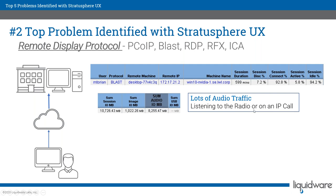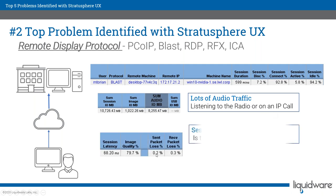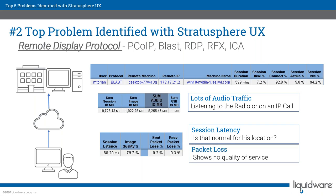We track session latency, packet loss, and audio traffic — for example, eight gigs of audio traffic over a month could mean the user is listening to the radio or on VoIP calls. We assess whether the packet loss is normal for their location. I live in the country so my latency is pretty high, but the question is whether it's normal or indicates other issues back in the data center. We've been monitoring remote display protocols for years and can also track mouse and keyboard activity per session.